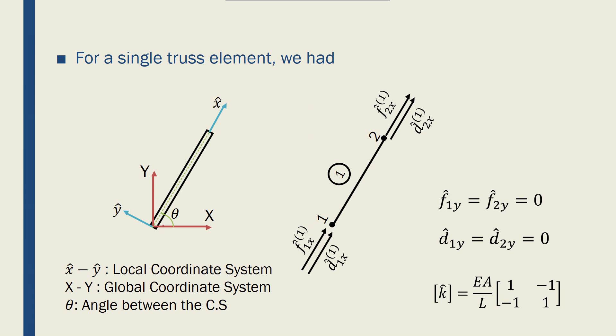And the global coordinate system, which is shown in red, X and Y without the hats, and they usually add a theta angle with respect to each other.